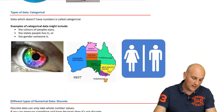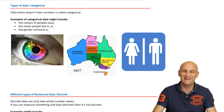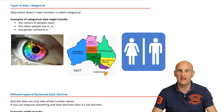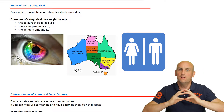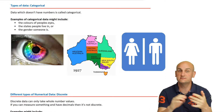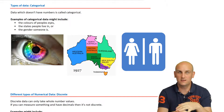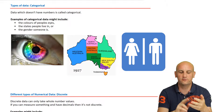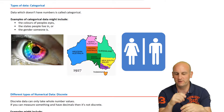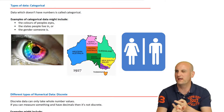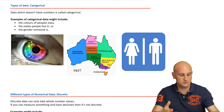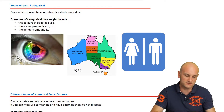Then the other type we have is called categorical — that's data we put into categories. It's data that doesn't have numbers, but maybe has eye colour. Think about eye colour: green, blue, brown, hazel. Those are sort of categorical data.